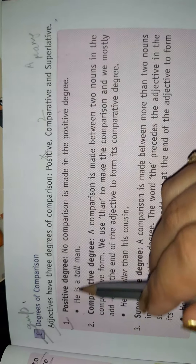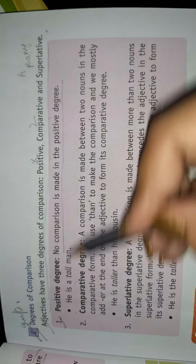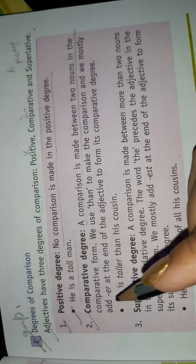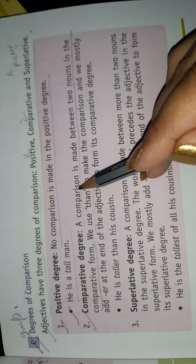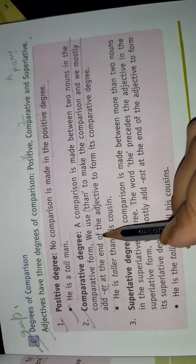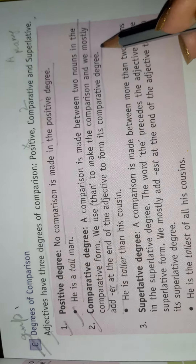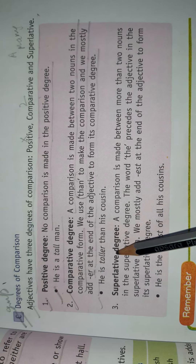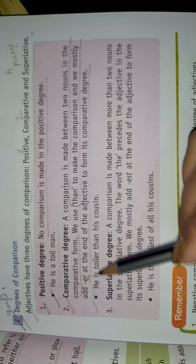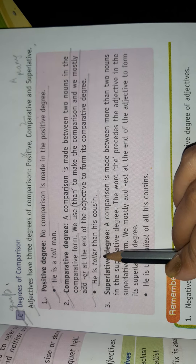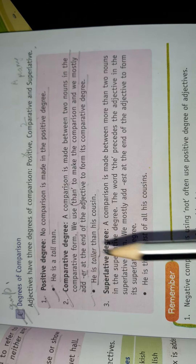Positive Degree: no comparison is made. Example: 'He is tall.' Comparative Degree: a comparison is made between two nouns. We use 'than' and mostly add -er at the end of the adjective. Example: 'He is taller than his cousin' — here we are comparing him with his cousin.